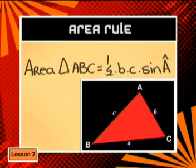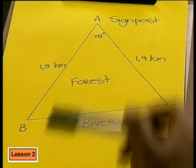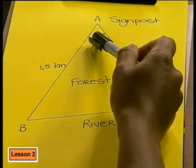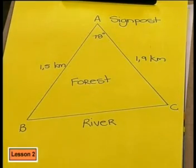Let's see. It says that the area of triangle ABC is half BC times sine A. In our triangle, angle A is here. But where are B and C?